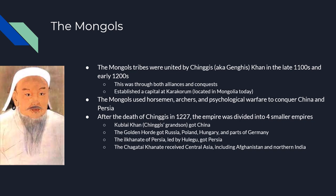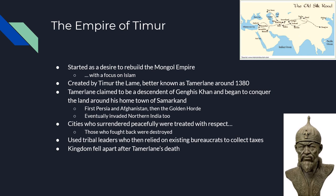Genghis will pass away in 1227, and his empire is going to be divided into four smaller empires. The smaller empire we really need to worry about is the Chagatai Khanate, because that involves Central Asia, Afghanistan, and Northern India. Following the death of Genghis, about 150 years later, we come to a man named Timur the Lame, better known as Tamerlane. His empire is going to be born out of a desire to rebuild the Mongol empire, but with a focus on Islam.